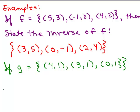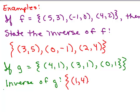Let's take another function. If g equals (4, 1), (3, 1), and (0, 1), then how would we find the inverse of g? We would simply switch the x and y coordinates again. So we would have (1, 4), (1, 3), and (1, 0).